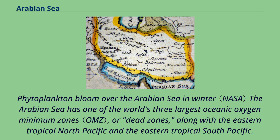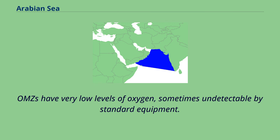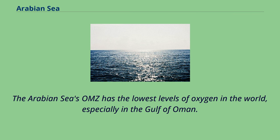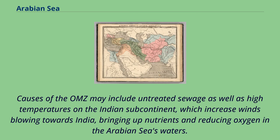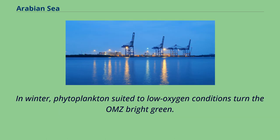The Arabian Sea has one of the world's three largest oceanic oxygen minimum zones, or dead zones, along with the eastern tropical North Pacific and the eastern tropical South Pacific. These OMZs have very low levels of oxygen, sometimes undetectable by standard equipment. The Arabian Sea's OMZ has the lowest oxygen levels in the world, especially in the Gulf of Oman. Causes may include untreated sewage and high temperatures on the Indian subcontinent, which increase winds blowing towards India, bringing up nutrients and reducing oxygen in the sea's waters. In winter, phytoplankton suited to low-oxygen conditions turn the OMZ bright green.